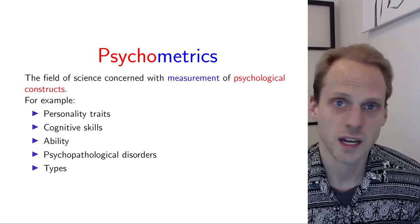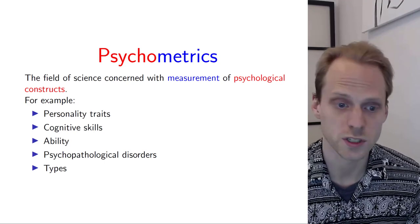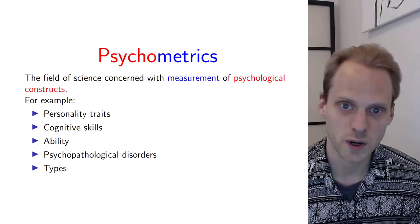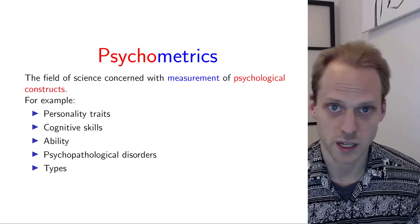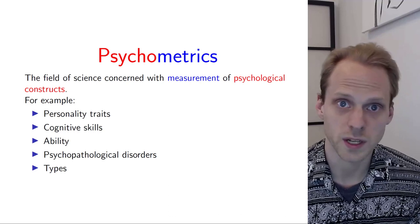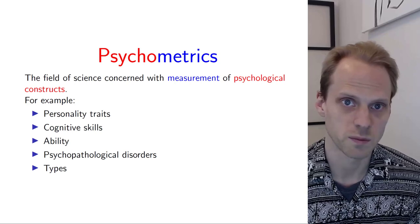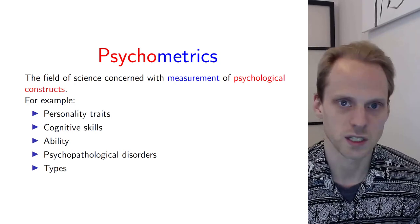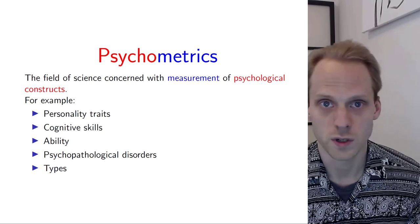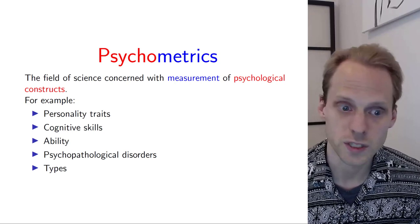So this is the field that is concerned with measuring things. This could be anything, for example personality traits, cognitive skills, abilities, psychological disorders types, mood states, things like that. A very large part of psychometrics is focused on education, on testing ability. For example, central exams in the Netherlands are made by CITO, which is a big institute with a big psychometric group. The question there is how do you measure people and their abilities as well as possible?